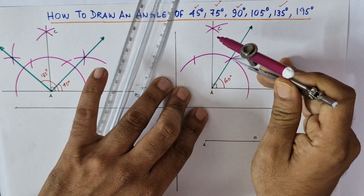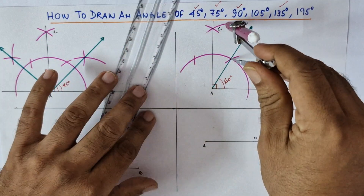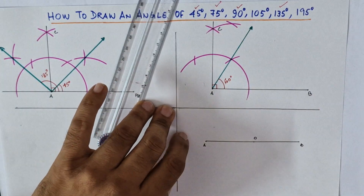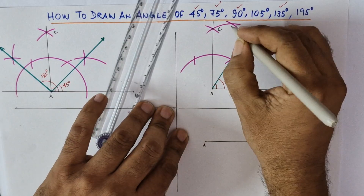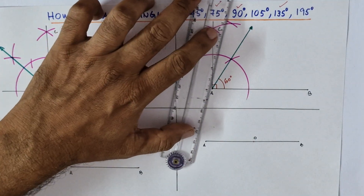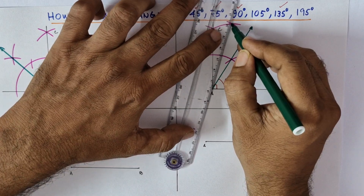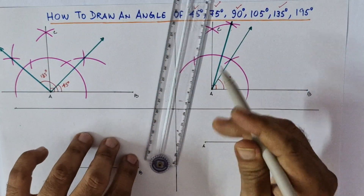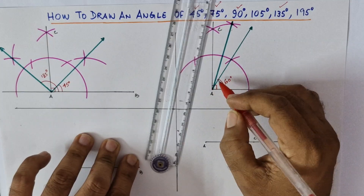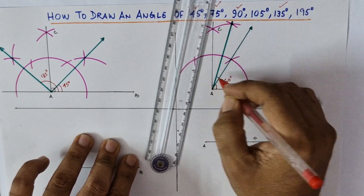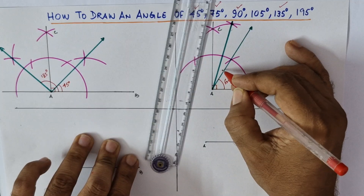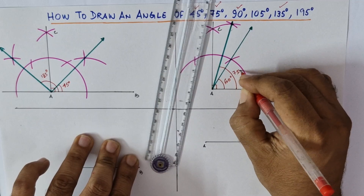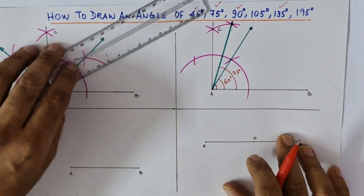Bisection is very simple as we have seen. We will extend this arc, take the intersection points as centers, and get another intersection of arcs. Mark this point and join it. Now this is 15 and this is 15 — I have bisected the angle of 30 degrees. So this is 15 and this is 60, and in total this one will be 75 degrees. So we have learned how to draw 75 degrees.